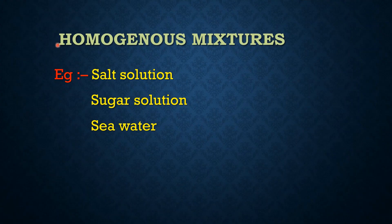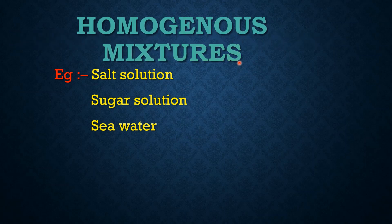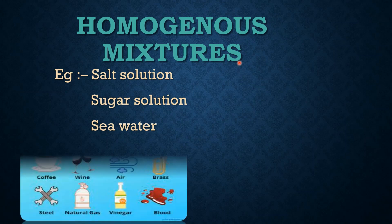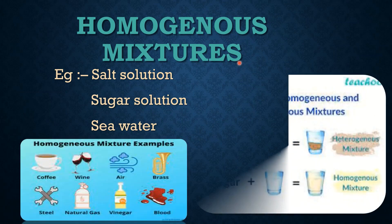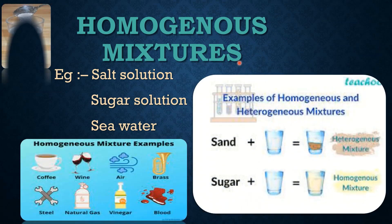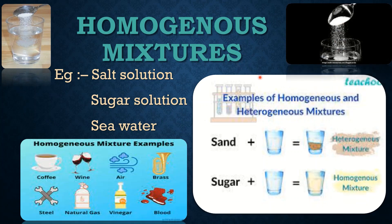There are two types of mixtures. First, homogeneous mixtures: mixtures with a uniform composition throughout are called homogeneous mixtures. Examples include salt solution, sugar solution, and sea water, as shown in the diagrams.